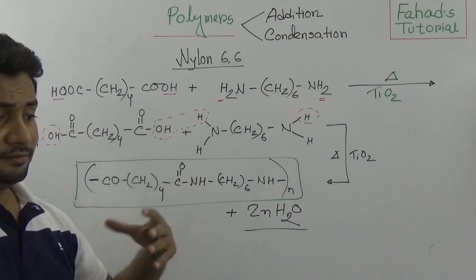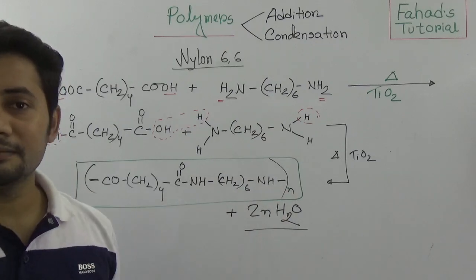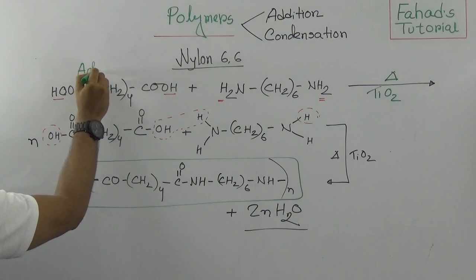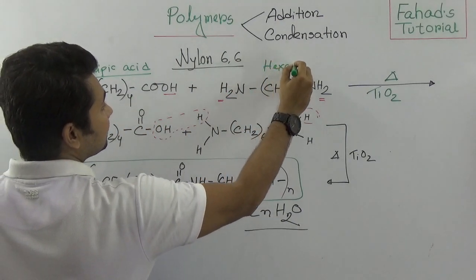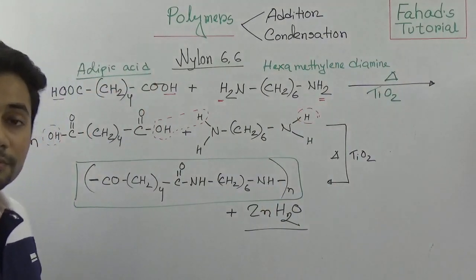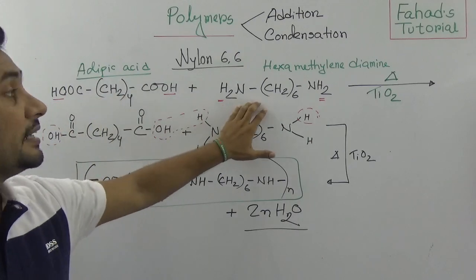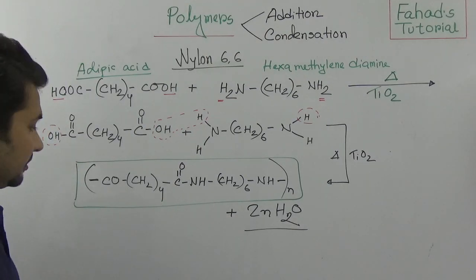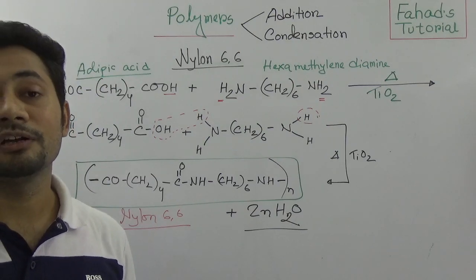This is a condensation polymer. It may seem complex at first but it is quite straightforward. Simply remember: adipic acid plus hexamethylenediamine, heated with titanium oxide, produces nylon 6,6. I hope you understand this polymer and polymerization reaction.